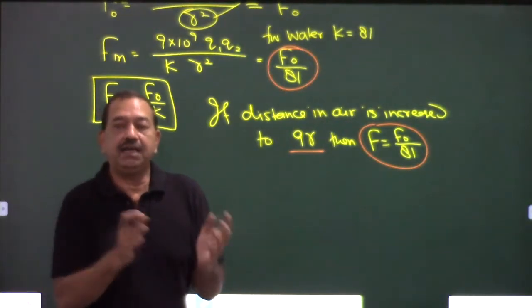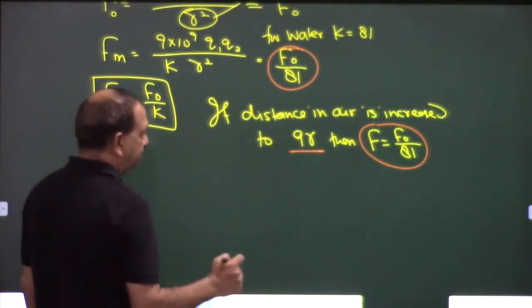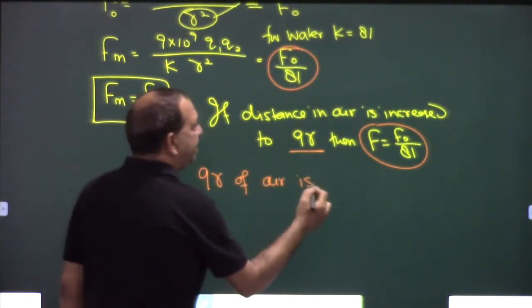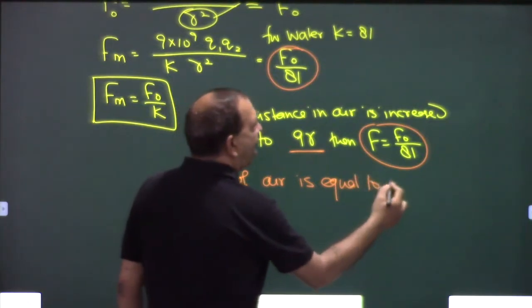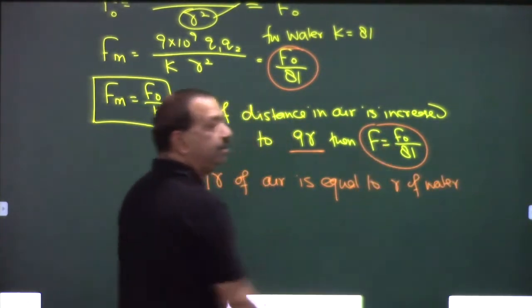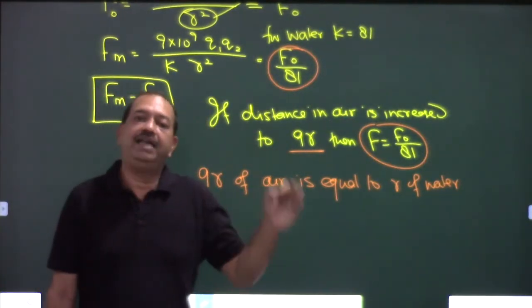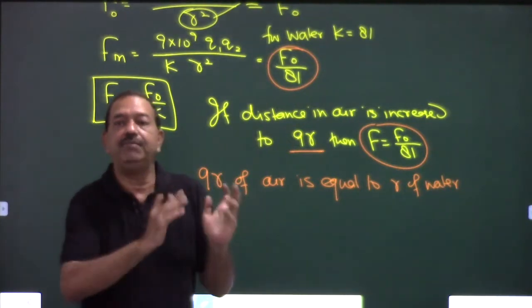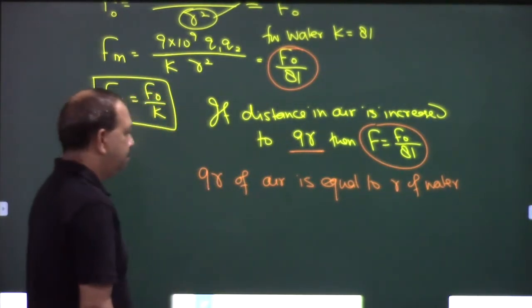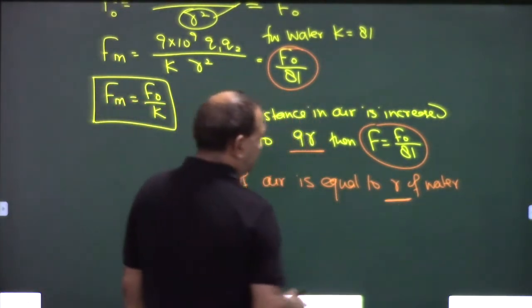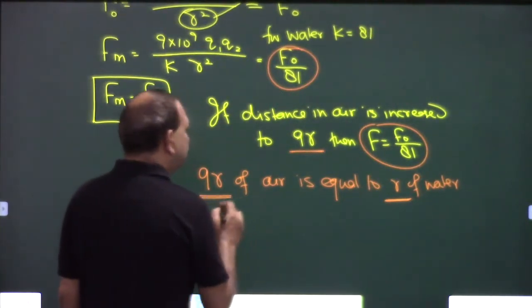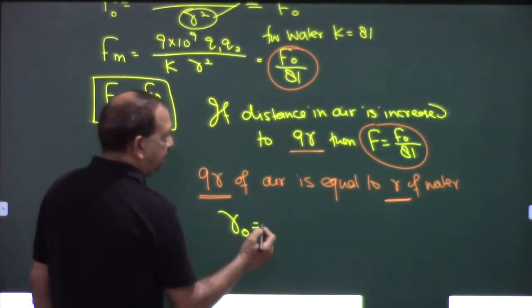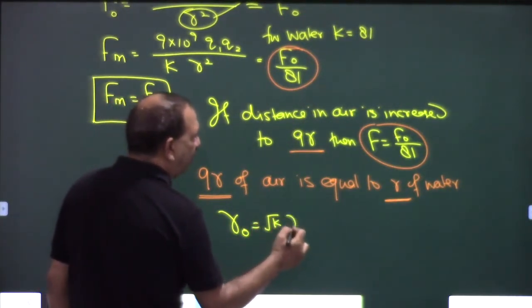Now this force is equal to the force in water. So what we can conclude is that 9R of air is equal to R of water. Any 9R distance of air, R distance of water ke equal hai. So using this we can find the force in multiple medium.